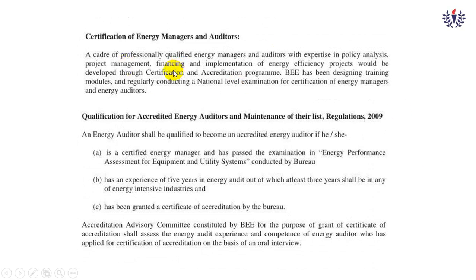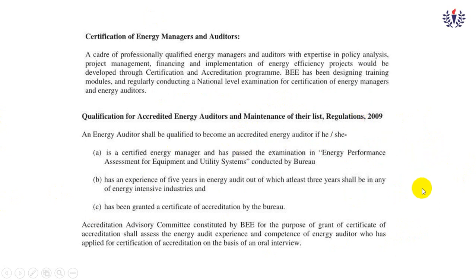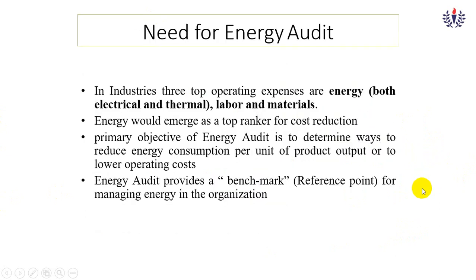Under designated consumers, thermal power stations should consume energy within a specified metric range. Fertilizer, cement, iron, and steel industries should use within 30,000 metric tonnes of oil equivalent per year. Charcoal and aluminium industries should use 12,000 and 7,500 metric tonnes of oil equivalent per year respectively. They have given some categories and energy consumption rules for such industries, and they want all industries to have qualified energy managers and energy auditors to analyze energy utilization and savings.